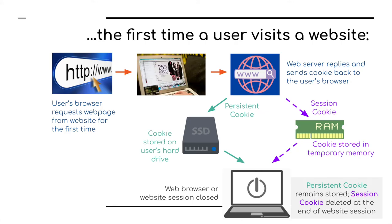We'll use this first diagram to look at the first time a user visits a particular website. First, a user types in a request — a URL — into the search bar and requests a particular web page for the first time. In this case, they've requested the ASOS sale of 25% off. The web server replies and sends the web page back, but it also sends cookies back to the user's browser. The browser then stores a permanent cookie on the user's hard disk, and any session cookies are stored in temporary memory (RAM) on the computer.